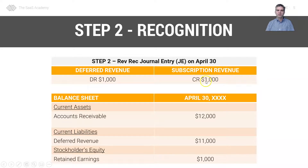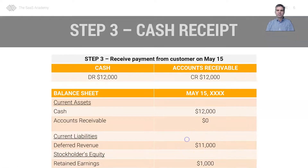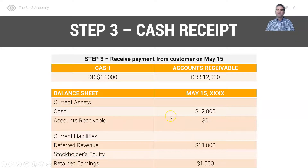That creates revenue on our P&L. You can see we have AR of $12,000 because the customer has not paid us yet. Deferred revenue originally started at $12,000 and is now down to $11,000.